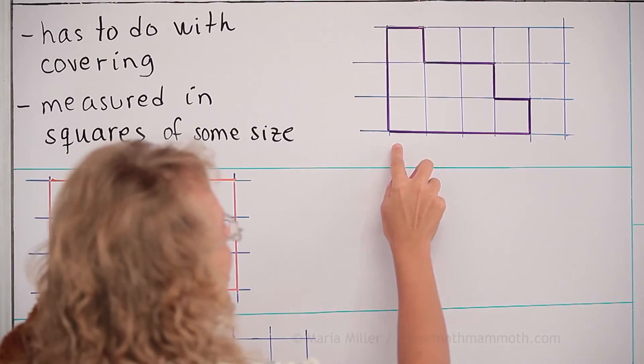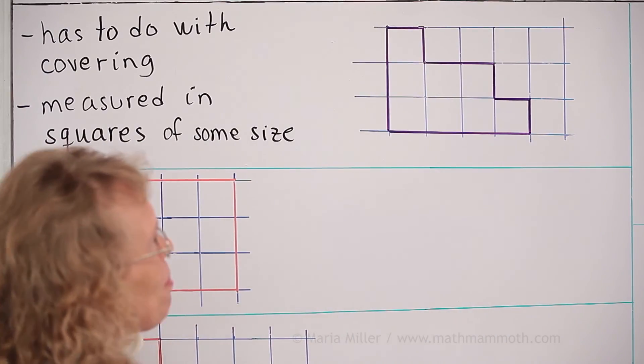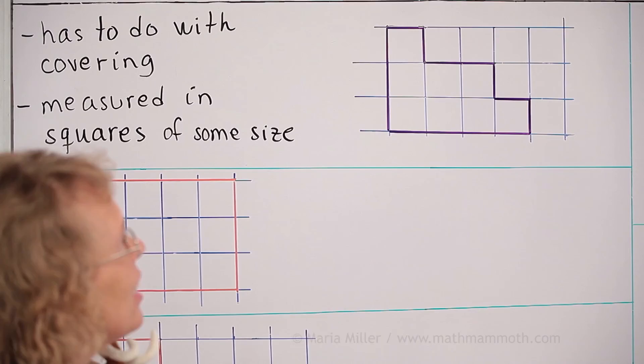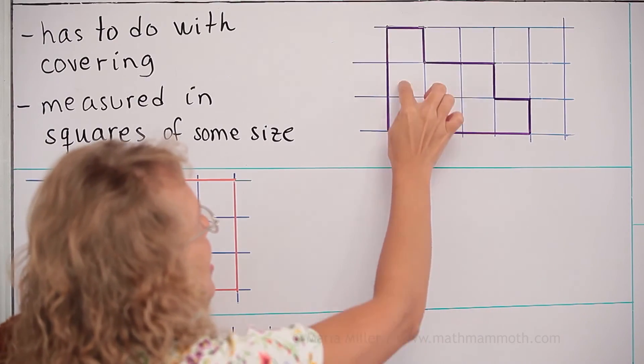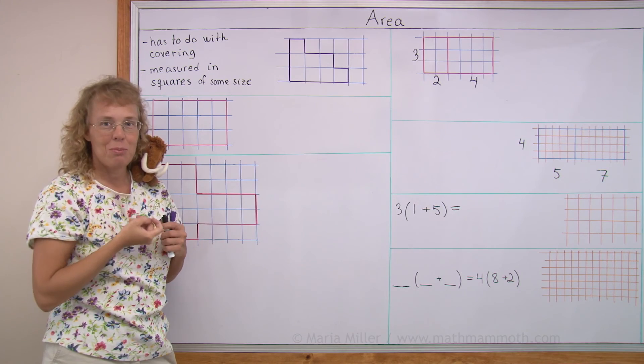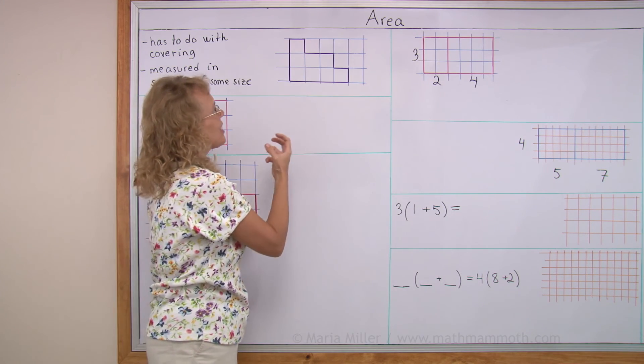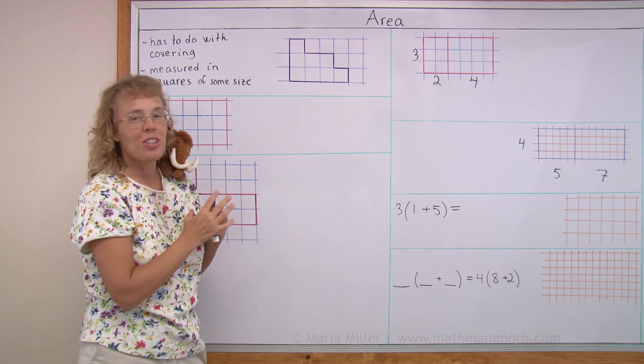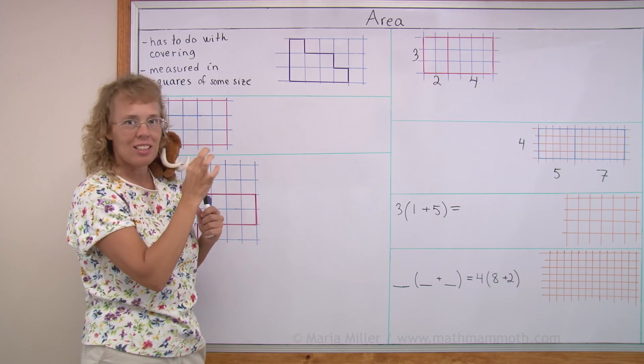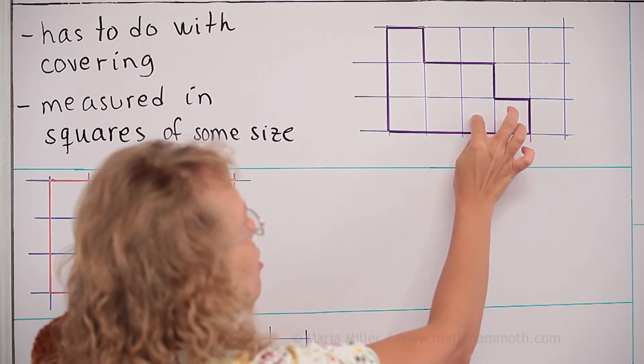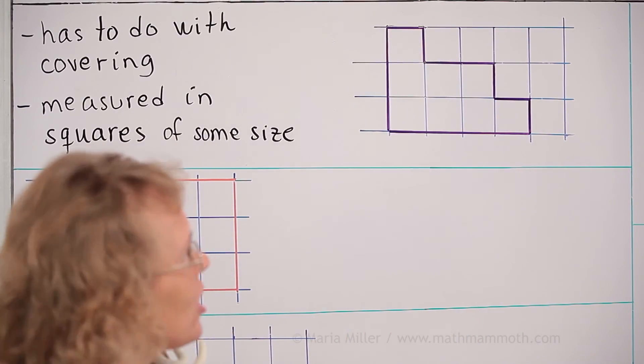Okay, so let's say that I have this kind of a funny shape. And it's on this grid and there's all these squares, right? So basically I just count how many squares are there in this shape. Or you can think of it as covering. If I had little square tiles, how many square tiles would I need to cover this shape?